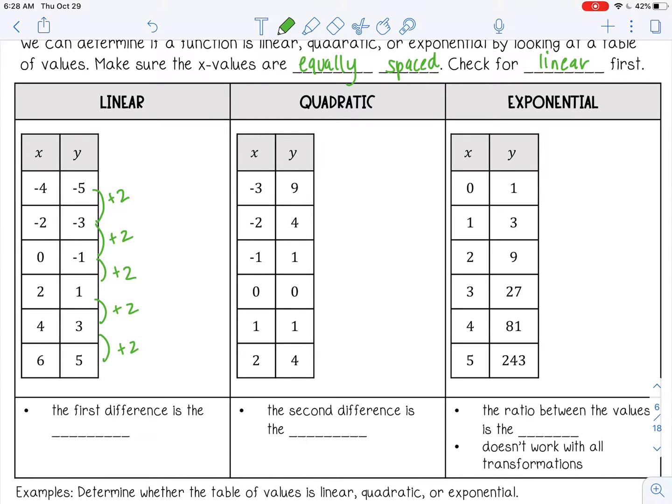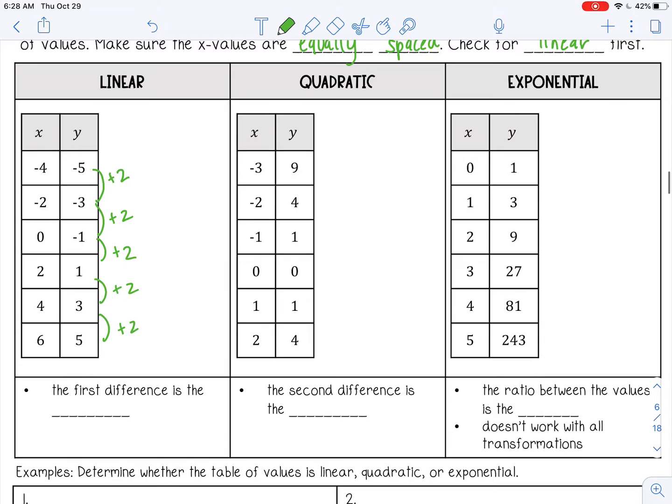So for linear, the first difference is the same. And all that means is what you are using to get from the first number to the second number and the second number to the third number—they're all those same numbers you're adding to each time. And that's because linear has a constant rate of change.